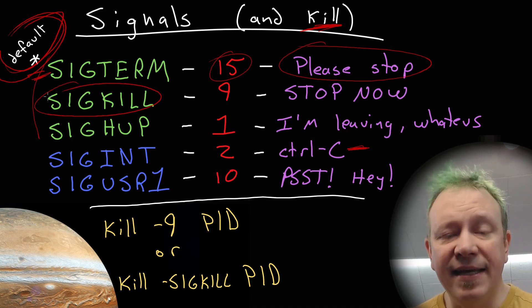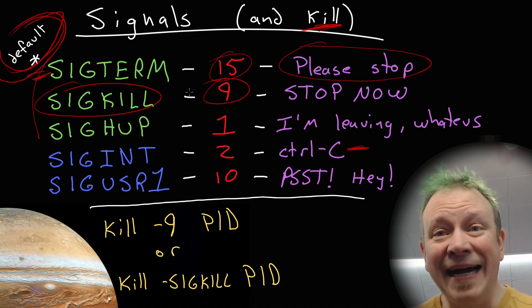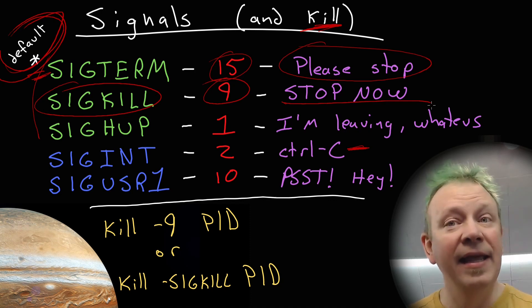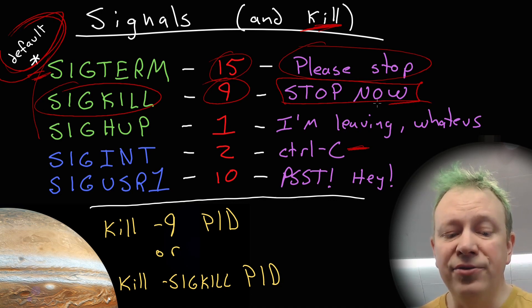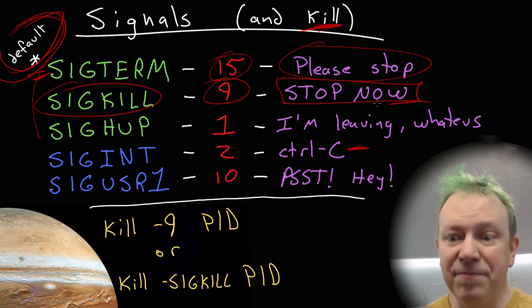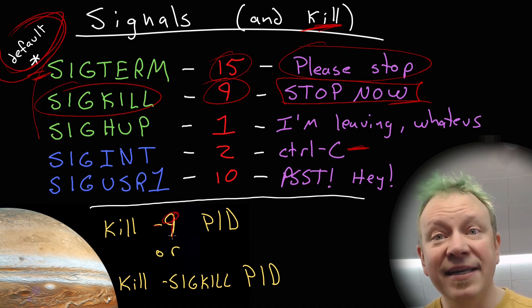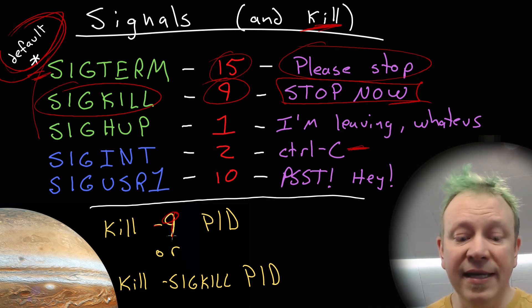A lot of times a program would be like, nah, I'm busy doing something. I'm not going to respond. If I were to stop now, bad things would happen. And that's where you can send SIGKILL or signal nine. And that basically says stop now. It short circuits the program. And unless something is going wrong with the program, there should be no reason that a program doesn't respond to signal nine. If you send SIGKILL, it should kill it. You've probably heard people say kill minus nine. That's how you send it. You say kill minus nine, and it sends the SIGKILL signal.